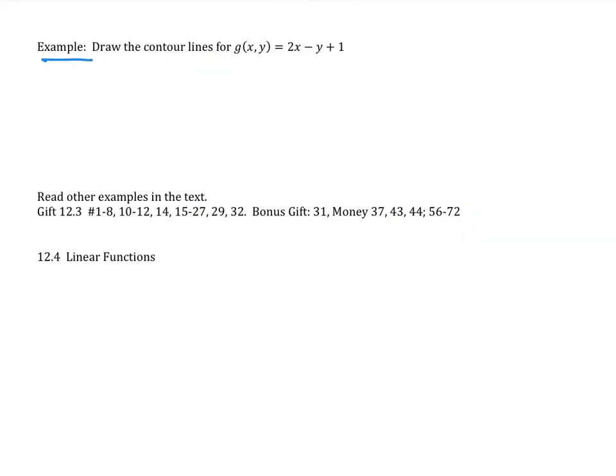The next example says, draw the contour lines for g(x,y) equals 2x minus y plus 1. Well, if we do this for different values of C, we're going to get C equals 2x minus y plus 1.